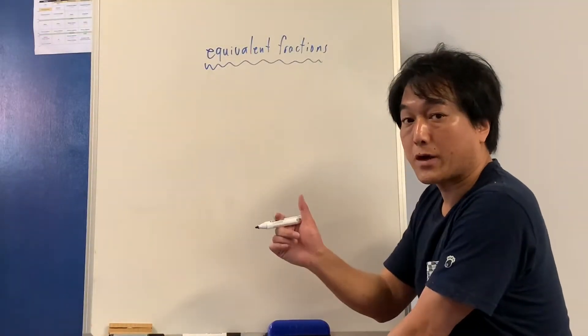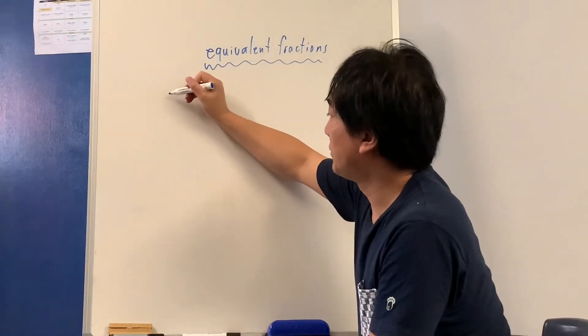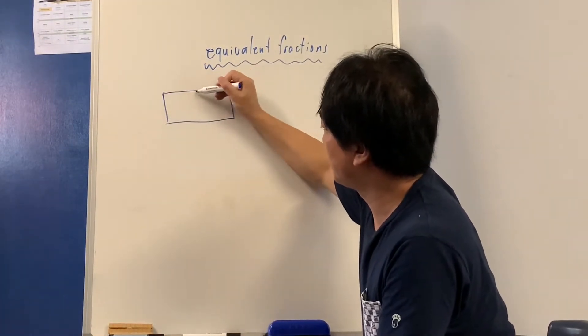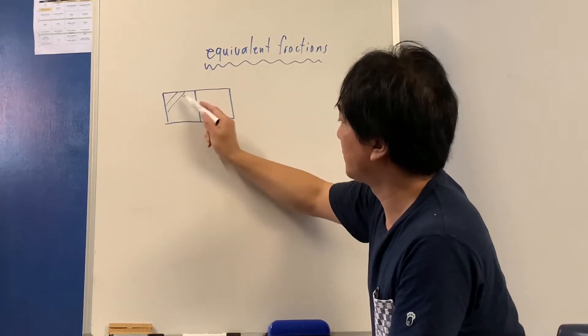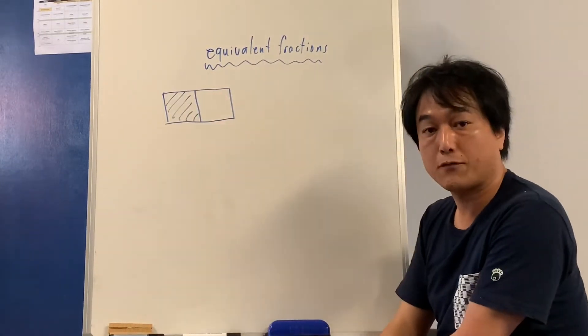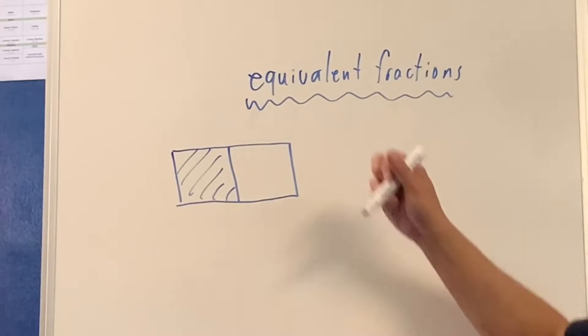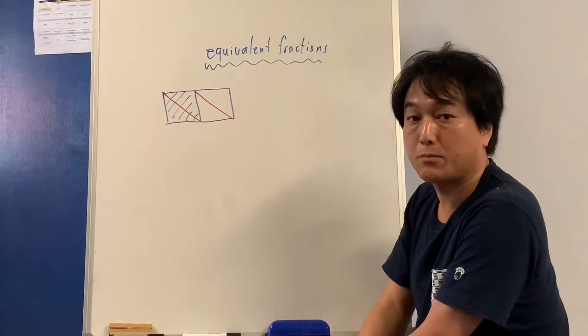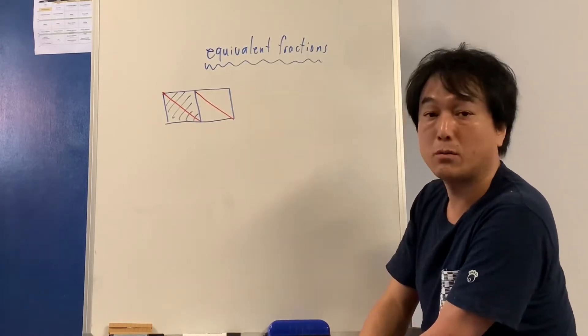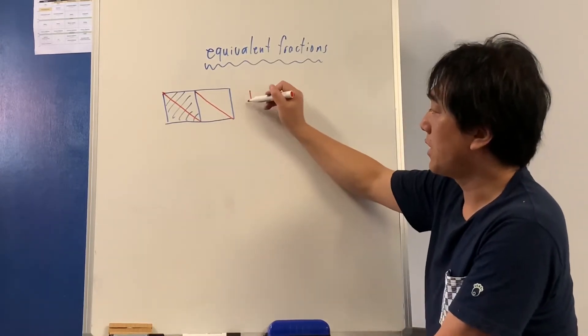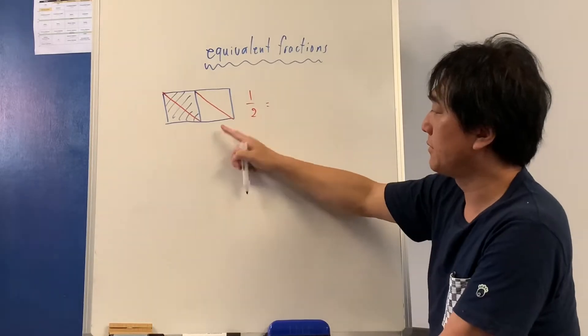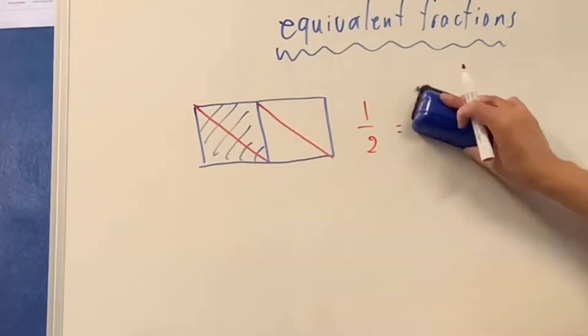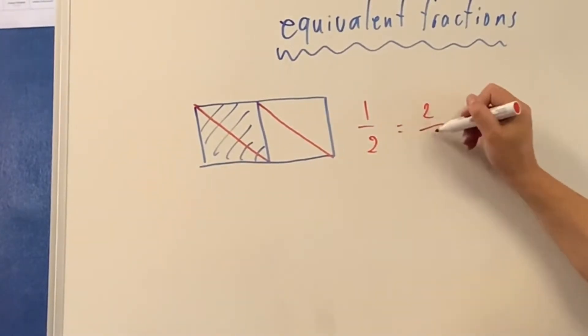Well, let's quickly do equivalent fractions. So that's one half. I'm going to cut both pieces into two equal parts. Now one half suddenly became two quarters.